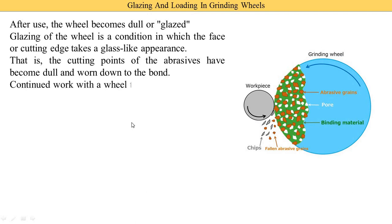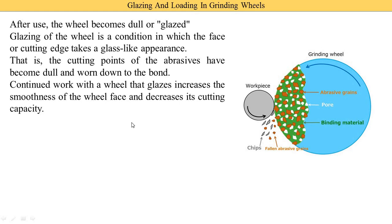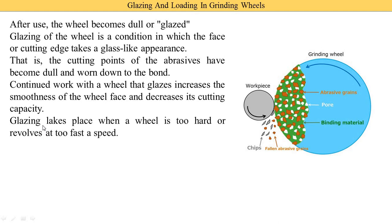These abrasive particles become dull, making a completely round and smooth surface. If we use a glazed grinding wheel for grinding operations, the wheel is not able to completely remove material from the workpiece — it reduces the cutting capacity. Glazing takes place when the wheel is too hard and revolves at very high speed. These are the two reasons glazing occurs: the grinding wheel is too hard, and it revolves at fast speed.